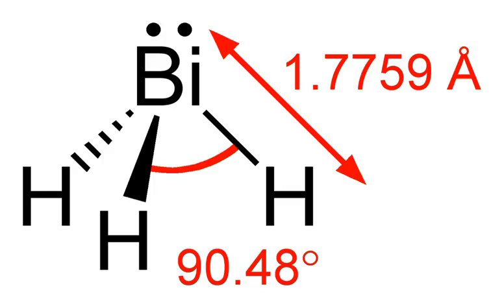Bismuth trihydride is prepared by the redistribution of methylbismuthine: 3BiH₂Me → BiH₃ + Bi(Me)₃. The required BiH₂Me, which is also thermally unstable, is generated by reduction of methylbismuth dichloride (BiCl₂Me) with LiAlH₄, as suggested by the behavior of antimony trihydride.